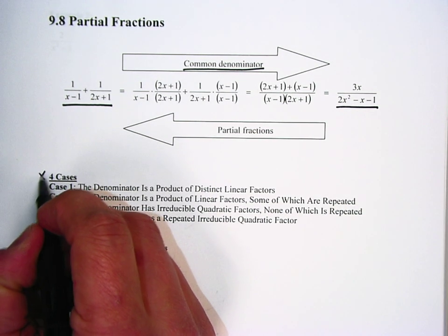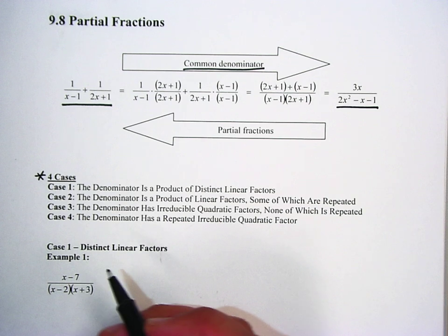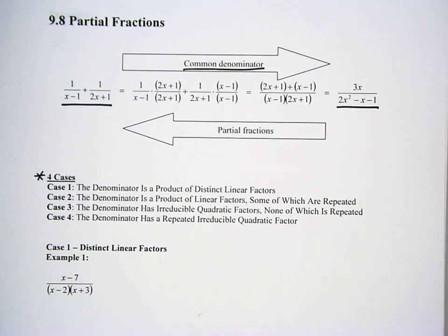Now there's four cases that we're going to be using. Case one is where the denominator is a distinct linear factor, and that's all we're going to do in this lesson. And then in case two, we have repeated linear factors, which we'll do on Tuesday. And then case three is quadratic factors that are not repeated. And case four is quadratic factors that are repeated.